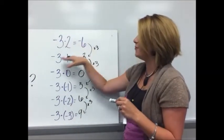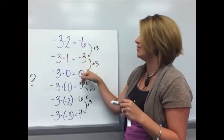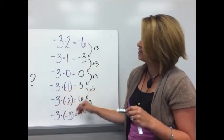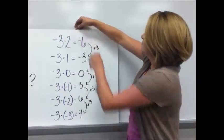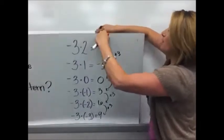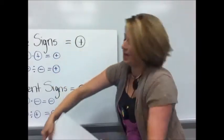Are you starting to see it? When I have those different signs I have a negative answer. When I have the same signs it gives me a positive. So that's the basis of your rule for multiplying and dividing integers.